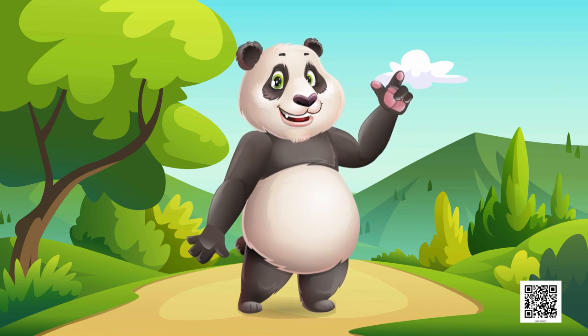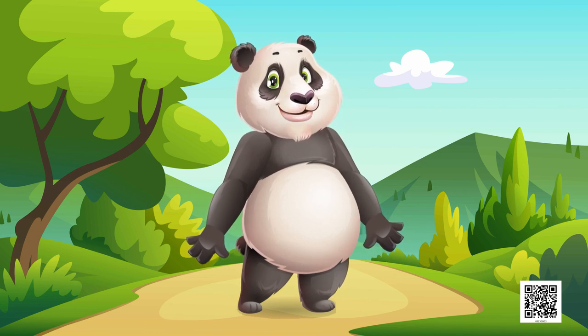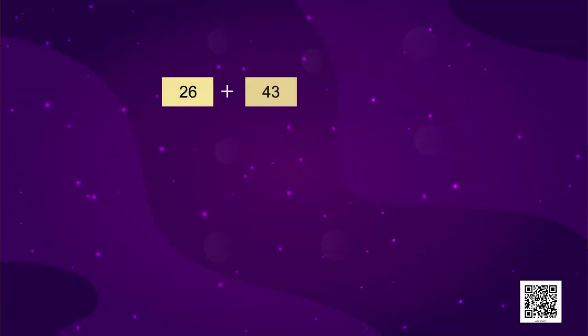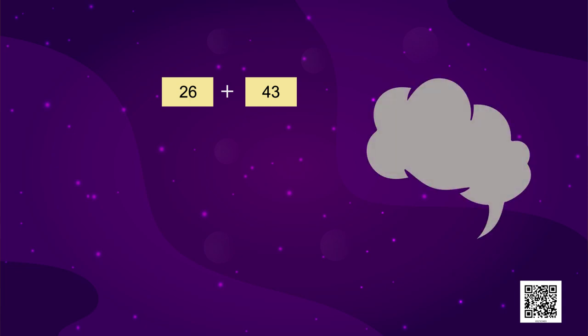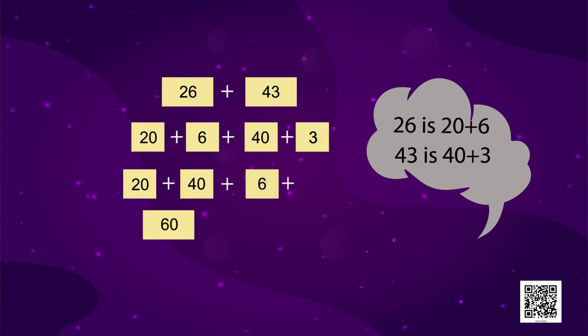Students, you can also add it in the same way. Now, let's try to add some other numbers. 26 plus 43. Now, 26 is 20 plus 6. And 43 is 40 plus 3. Now, we add 20 and 40 together. And what do we get? We get 60. And then we add 6 and 3 together. And what do we get? 9. Now, we have to add 60 and 9. And what number do we get? 69. So, this is very easy.